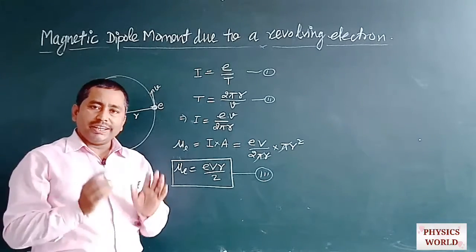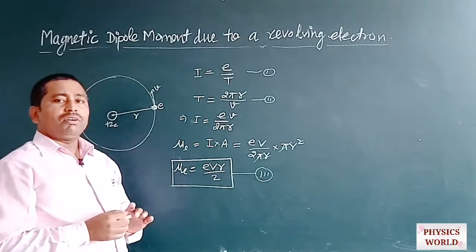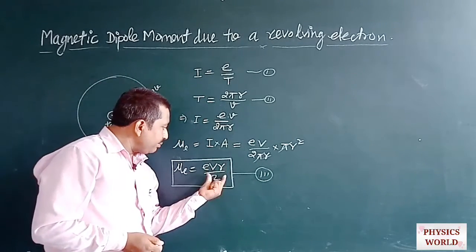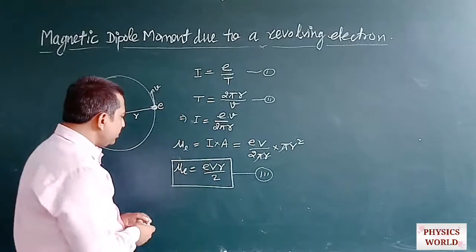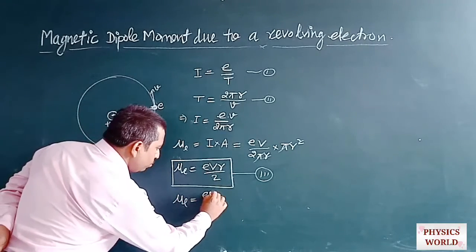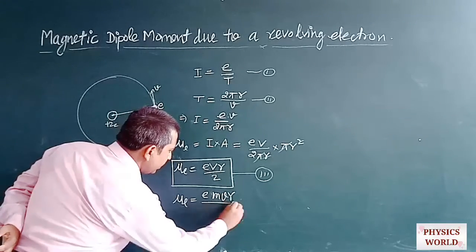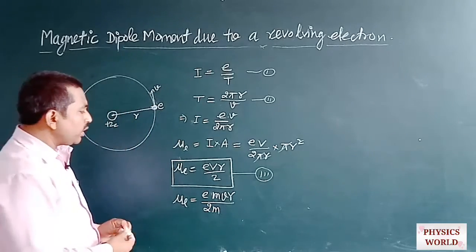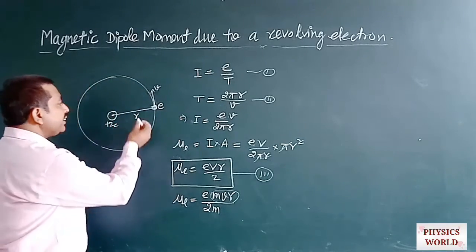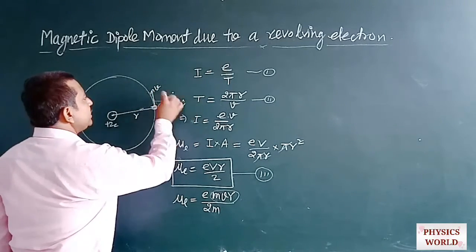According to Bohr's postulates, the angular momentum of an electron during revolution in its orbit is always an integral multiple of h/2π. If we multiply and divide by m in the expression for μL, we get μL = (E × mvr) / (2m). Here, mvr is recognized as the angular momentum of the electron, because r is always perpendicular to v, so the angle between r and v is always 90°.